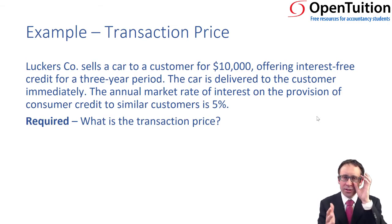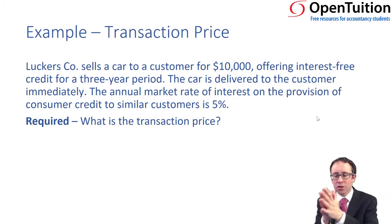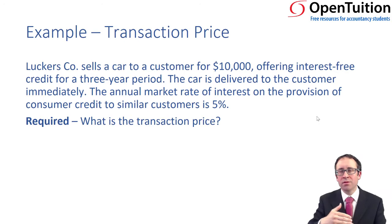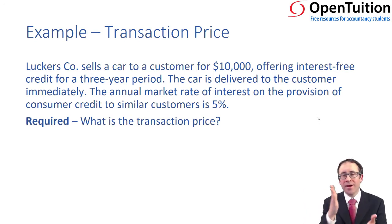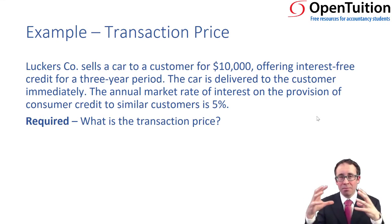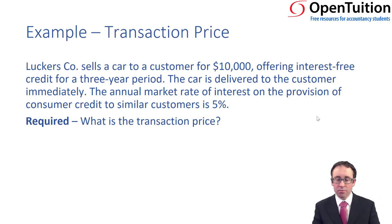Of that transaction price we need to allocate some of it to the car and some of it as interest, because there is interest income. We've effectively allowed the customer to pay much later than they would have done today, so if they were to pay today they would have paid less — to take account of the time value of money. In the future they're paying more, so there is an interest element implicit within the arrangements. We need to split it out.